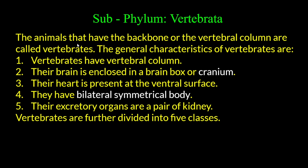In Vertebrata, the brain is enclosed in a brain box called the cranium — in Nepali this is called 'Khapar.' Their body weight is divided into 5 classes. The general characteristics of Vertebrata include: the brain is enclosed in the cranium, and the heart is present at the ventral surface. The belly side is the ventral surface; the back side is the dorsal surface.